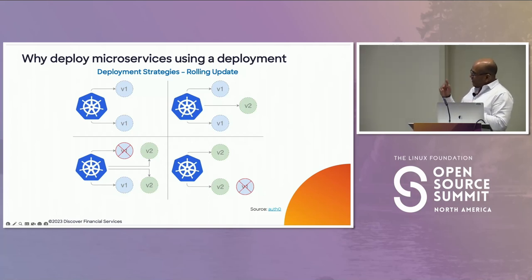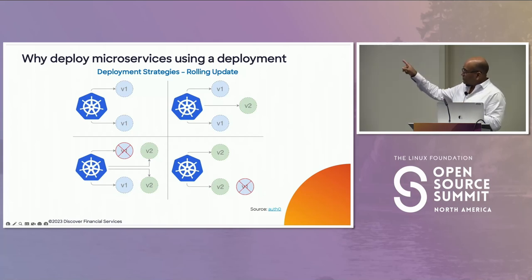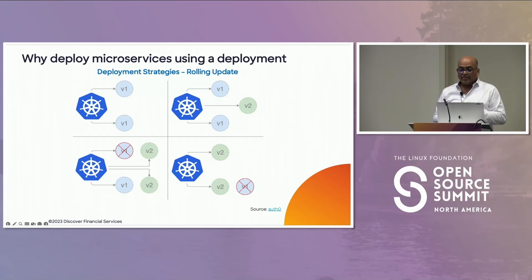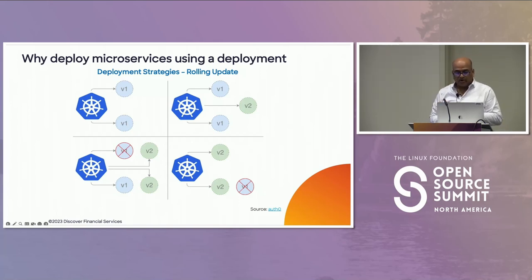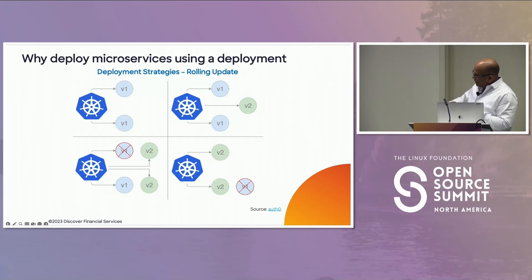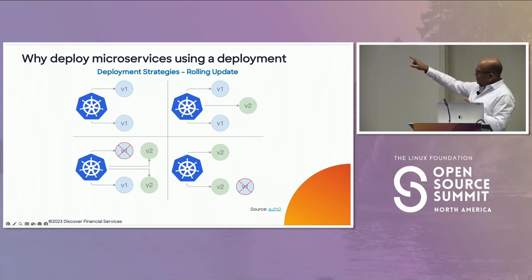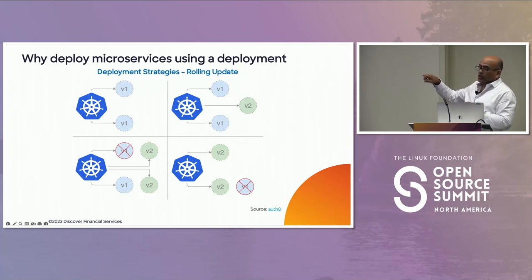With rolling update, if you're running four replicas, it's going to create the first replica of the new pod, then kill the old one, and so on — your users will not suffer any downtime. The second strategy is recreate, which is the complete opposite of rolling. Recreate kills all your pods first and then brings the new ones up. Please do not do this in production — especially if you have thousands of pods and you've promised 99.9999% SLA.